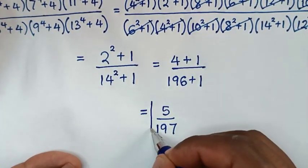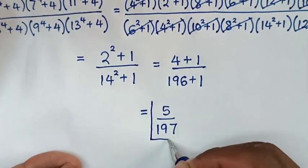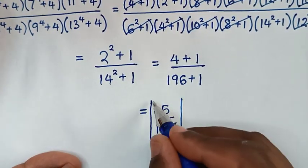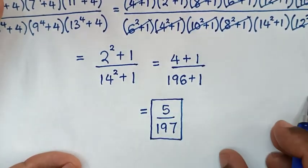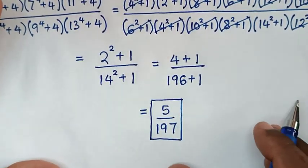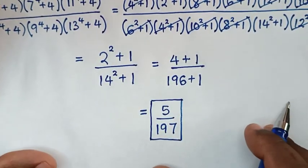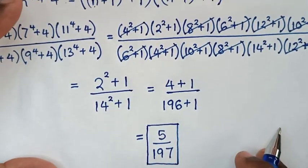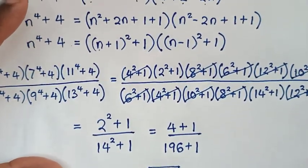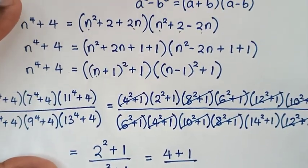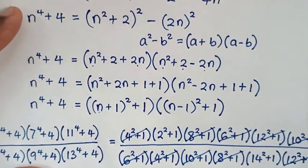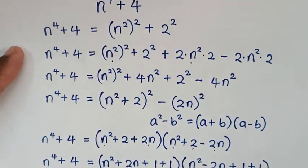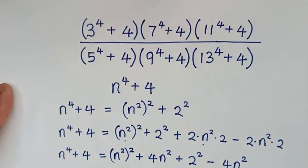Therefore, 5 over 197 is our final answer. Thank you. Don't forget to subscribe to my channel, and see you in the next video. Bye bye.